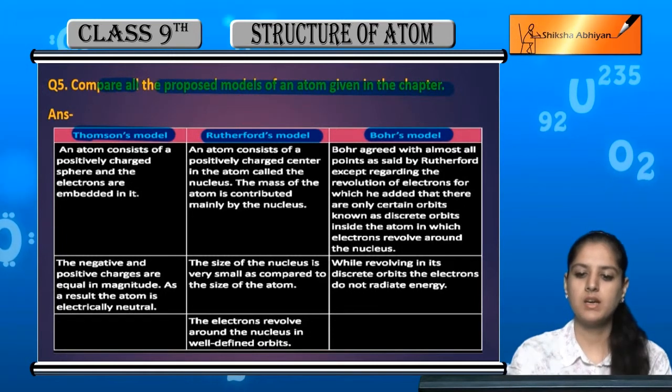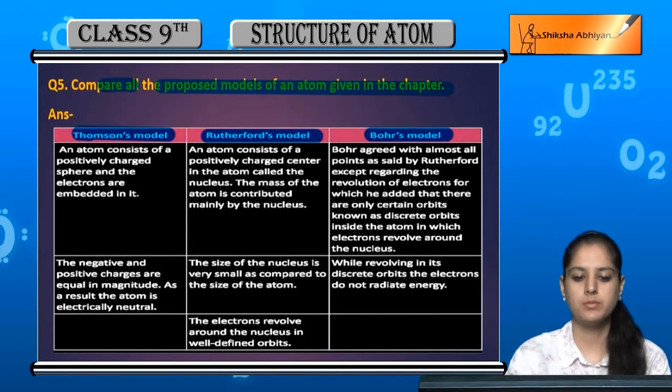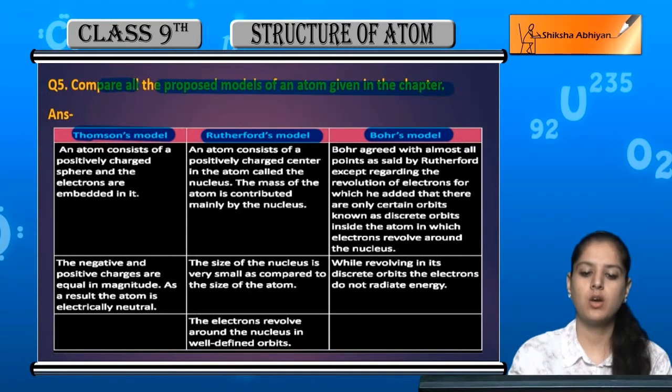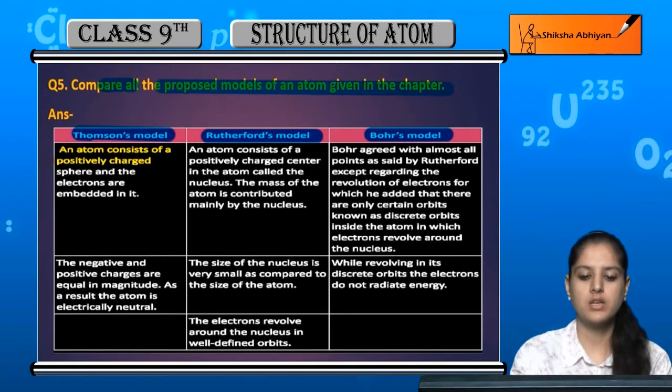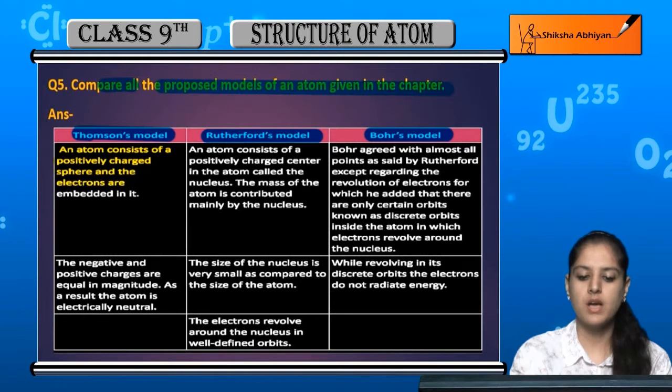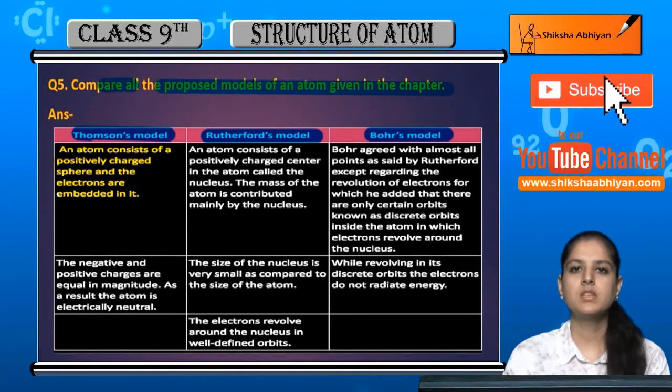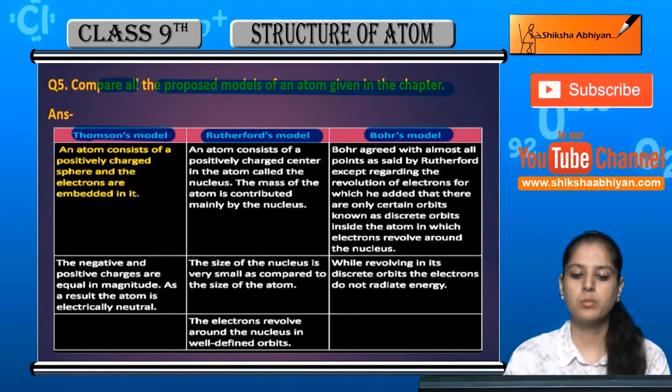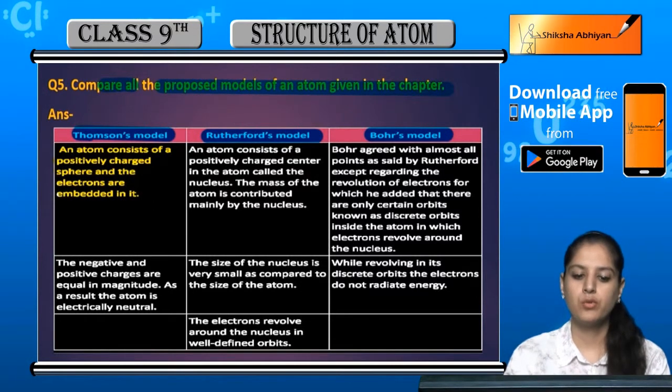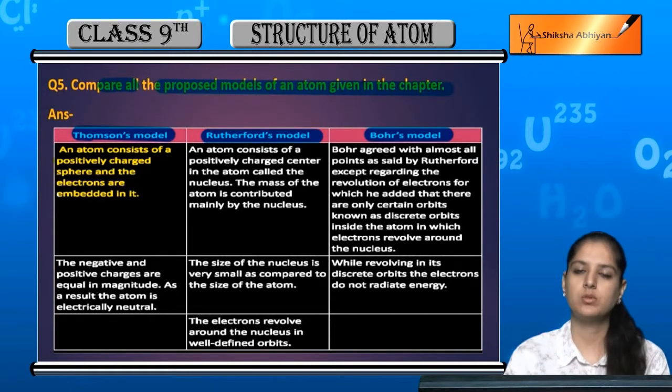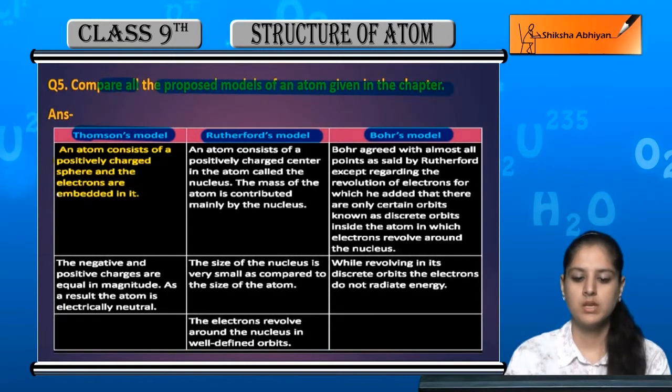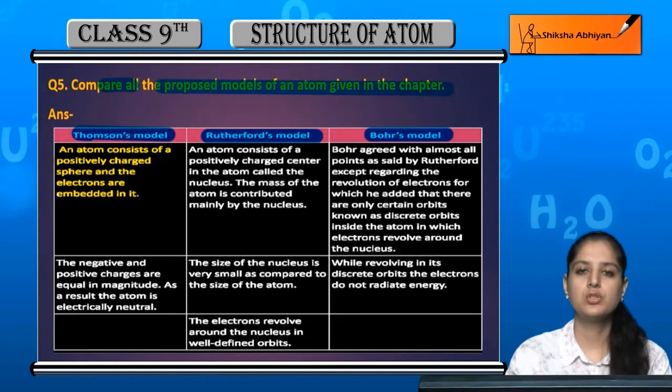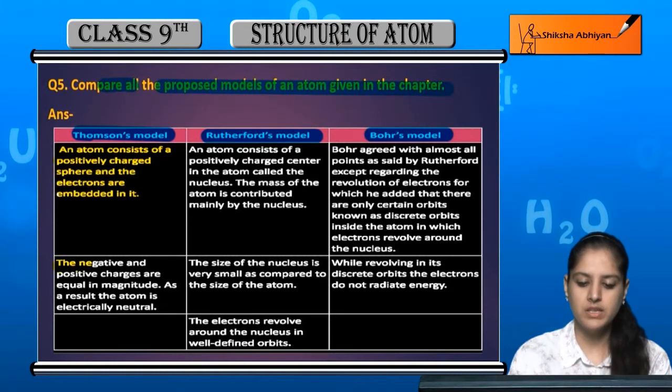First, Thompson's model. According to Thompson's model, an atom consists of a positively charged sphere and the electrons are embedded in it. The main postulate of Thompson's model was that the atom has a positively charged sphere in which electrons are embedded.